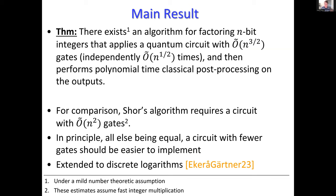Let's read the main result carefully. There is an algorithm — relying on a mild number-theoretic assumption — for factoring n-bit integers using only about n^(3/2) gates. It's a quantum circuit with n^(1.5) gates that needs to be applied roughly √n times independently. The outputs from those quantum circuits then feed into polynomial-time classical post-processing, which gives you the factorization.